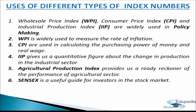Uses of Different Types of Index Numbers. Wholesale Price Index, Consumer Price Index, and Industrial Production Index are widely used in policy making. CPI or Cost of Living Index numbers are helpful in wage negotiation, formulation of income policy, price policy, rent control, taxation, and general economic policy formulation. The Wholesale Price Index is used to eliminate the effect of changes in prices on aggregates such as national income, capital formation, etc.